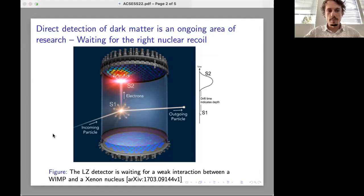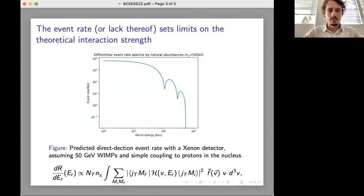So far there have not been any confirmed detections of dark matter but we can still learn something from the lack of observed events. The event rate from these experiments sets limits on how strong the interaction between dark matter particles and nuclear matter could possibly be.